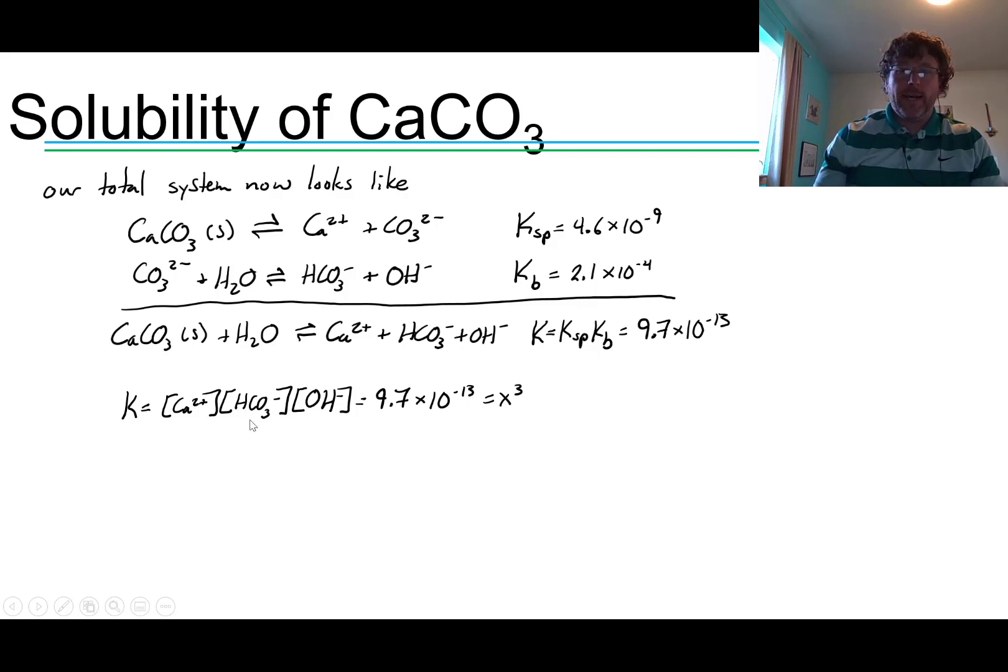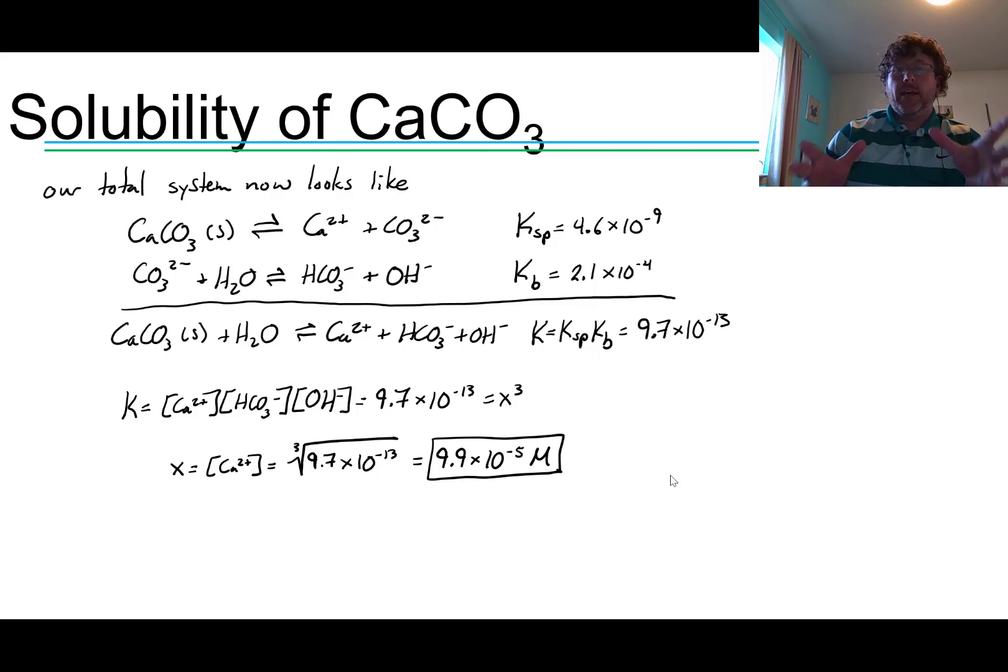I can therefore solve for X, the calcium concentration, by taking the cubed root of the K value, 9.7 times 10 to the negative 13th. So calcium concentration is equal to the cubed root, 9.7 times 10 to the negative 13th, giving us an equilibrium calcium concentration, 9.9 times 10 to the negative 5th to 2 sig figs. Why do we care about that calcium concentration? Because that's a better approximation of how soluble our coral would be in ocean water. And notice if you compare this value to the first value that we've generated, the solubility of the coral has gone up by almost 50%. It's 145% more soluble if we remember that the base behavior of carbonate is going to impact how soluble the calcium carbonate is through Le Chatelier's principle.